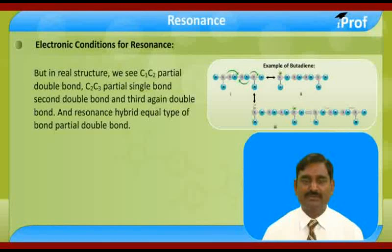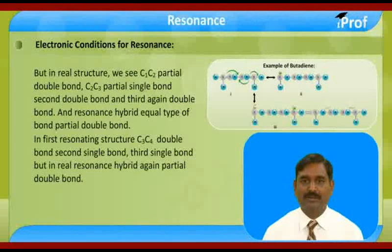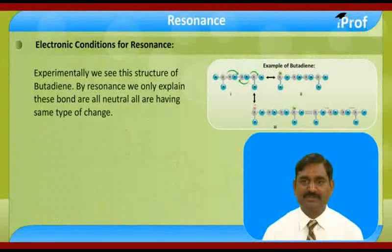For C3-C4: in the first resonating structure it is a double bond, in the second it is a single bond, and in the third it is again a single bond. But in the real resonance hybrid, C3-C4 is again a partial double bond. This resonance hybrid has equal types of bonds and equal bond strength, and experimentally this is confirmed as the real structure of butadiene.